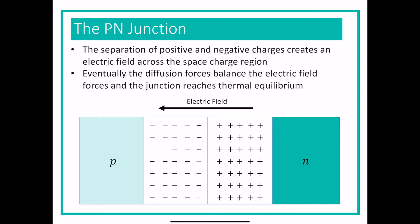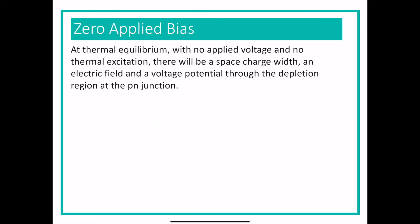For the rest of today, we're going to talk about how the P-N junction works when it's at equilibrium. We'll talk next week about what happens when we apply voltage. For right now, we're talking about P-N junctions not connected to anything. At thermal equilibrium, you have no applied voltage, no temperature changes, and a space charge region with a certain width. There is an electric field, and also a voltage potential through that depletion region — a change in voltage potential that we'll get to in a minute.